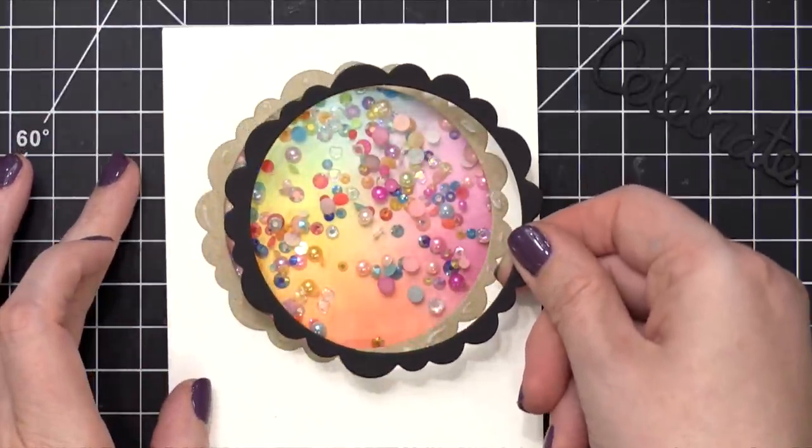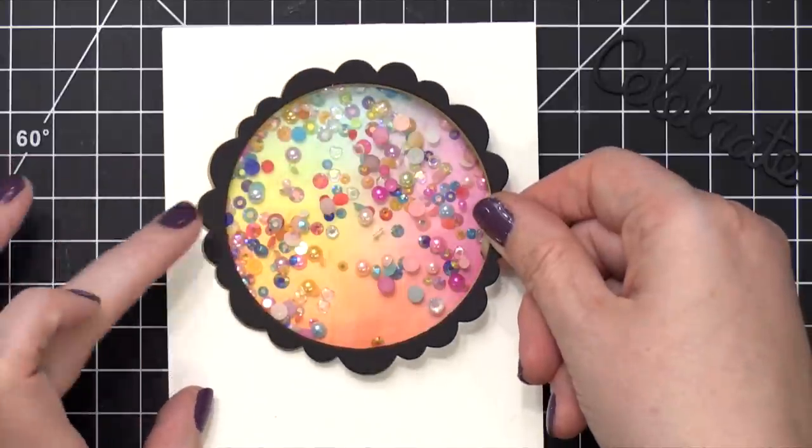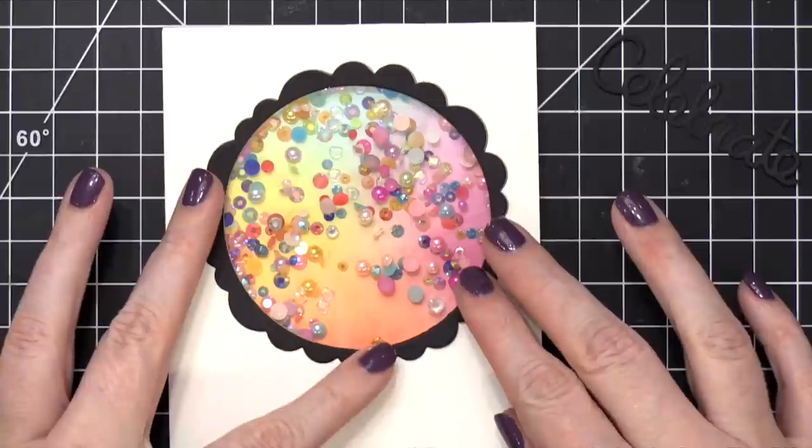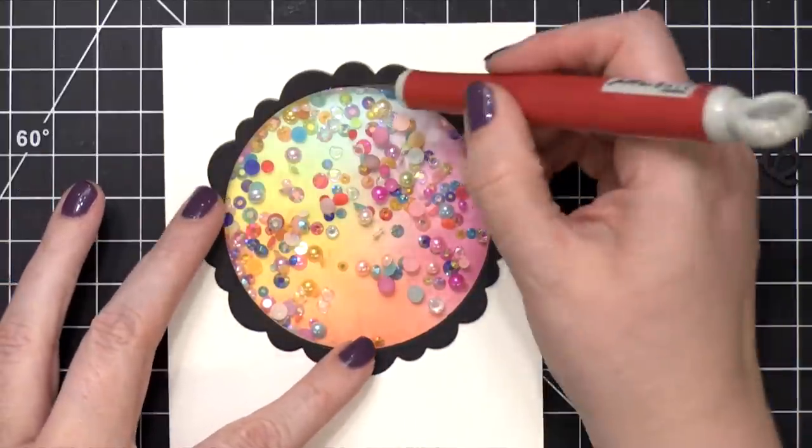So I'm just going to line that up and press that right over the top. As far as the die cut greeting that says celebrate, I'm going to change up the adhesive I'm using, and I'm actually going to switch to some Gina K Designs Connect Glue.